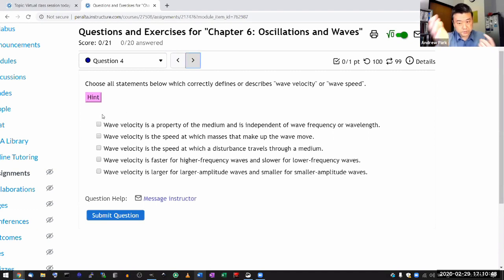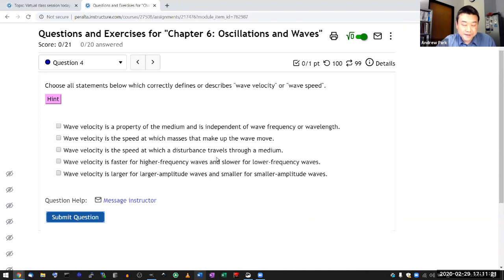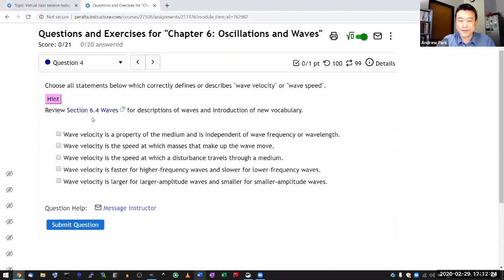And I think any multiple choice questions I would skip. Skip that for now. And so this is the multiple answer question. So let me just do this question properly. It says choose all statements below which correctly, and there are two possibilities here for questions of this type, defines or describes. So some of the correct choices will be what I call a matter of definition, and some of them might be describing a property of wave velocity or wave speed.